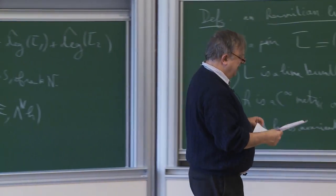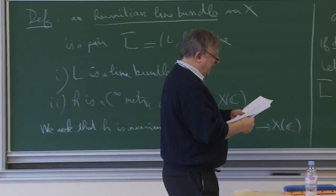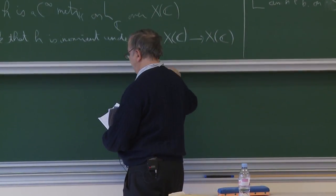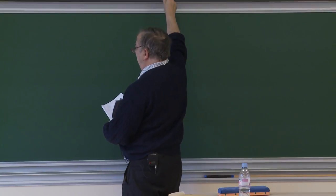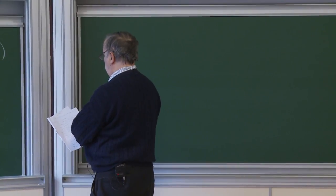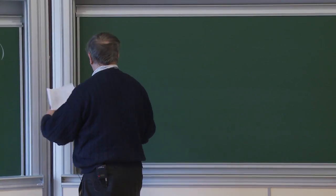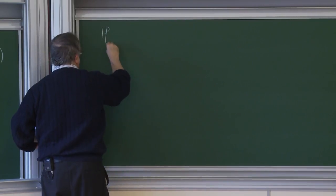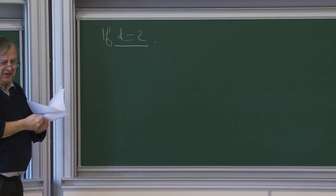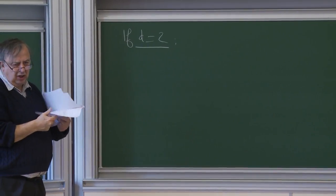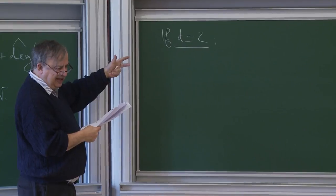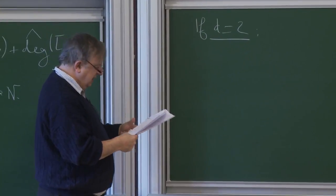So this is the case D equals 1. We have an interesting invariant of Hermitian line bundles. Now we consider the case D equals 2. We have what's called an arithmetic surface — a dimension two arithmetic variety. This is really where Arakelov theory starts: with arithmetic surfaces.